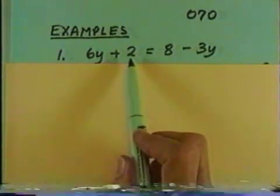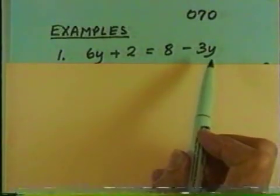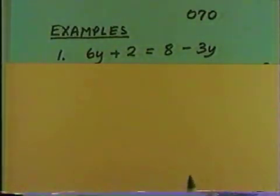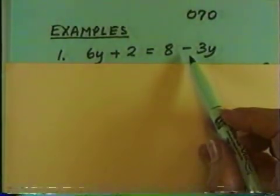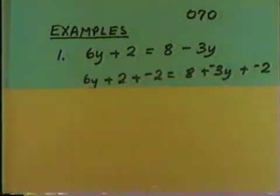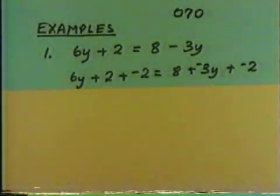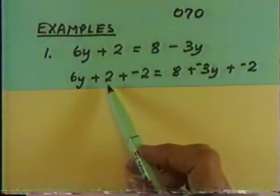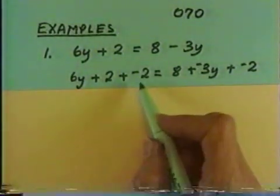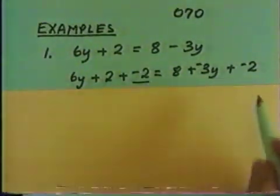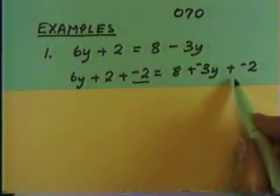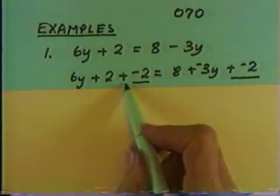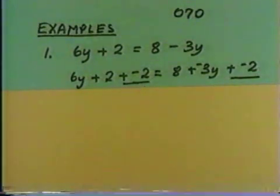So let's rewrite the equation, copying both sides of the equation and adding negative 2 to both sides. As we go, let's remember to change subtract 3y to add negative 3y. So here's our line: 6y + 2 + (-2) = 8 + (-3y) + (-2). So we're adding negative 2 on both sides of the equation.